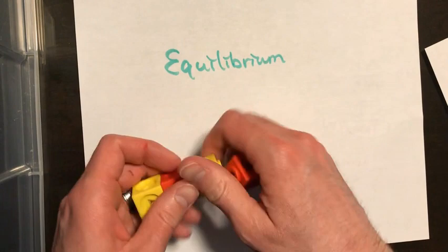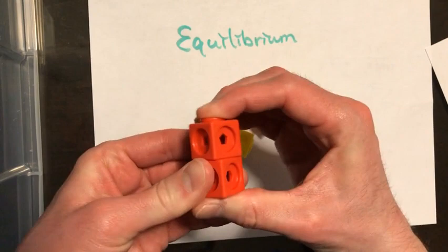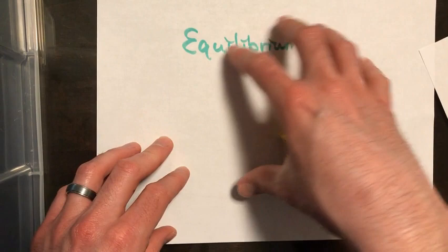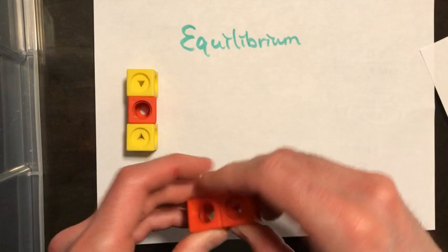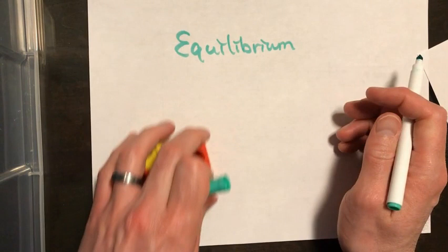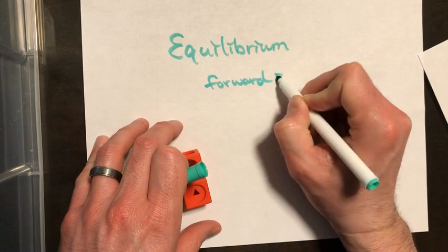Now we end up lying to ourselves a lot, is that this process only goes one direction. In equilibrium, we say that this process actually ends up going back and forth constantly, where the products themselves can bump into one another, react, and back form reactants. And so when we say something is in equilibrium, we talk about the rate of the forward reaction is equal to the backward, or what we refer to as the reverse reaction.